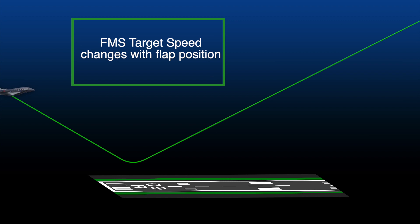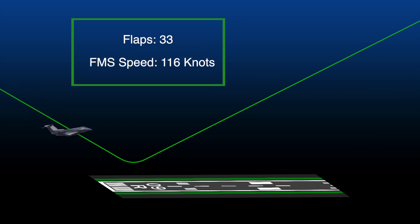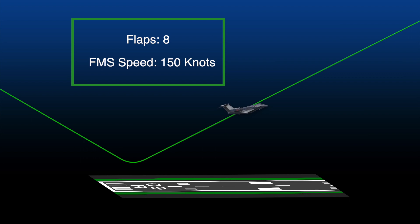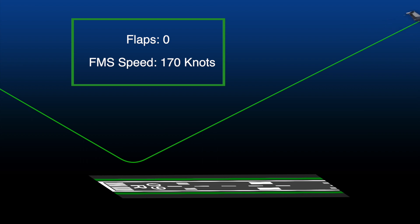In the event of a go-around, the FMS target speed also changes with flap position. During the initial go-around with the flaps at 33, the FMS target speed is 116 knots. As the flaps are retracted, the target speeds increase up to 170 knots with flap 0. As always, the pilot can select a manual speed at any time.